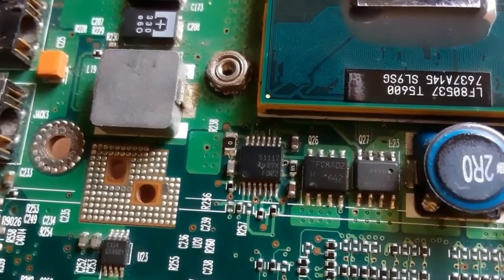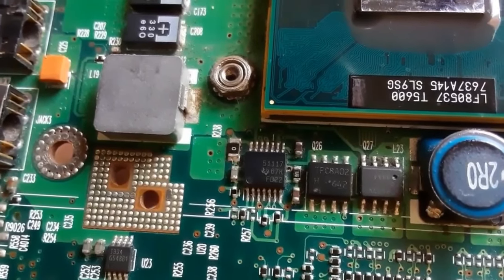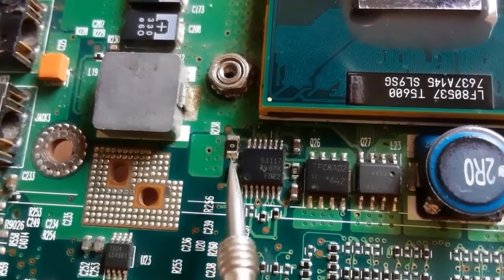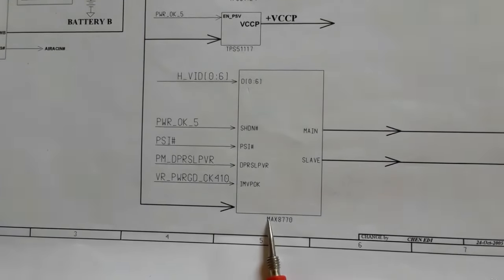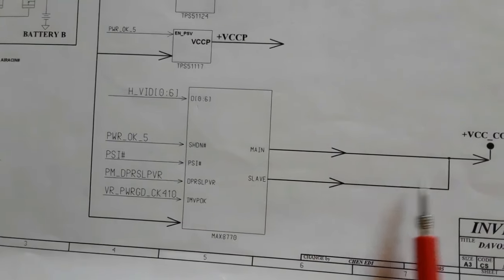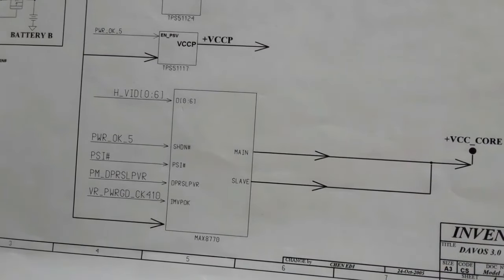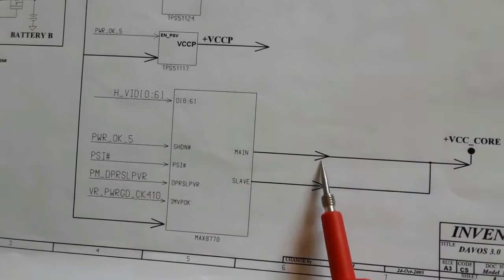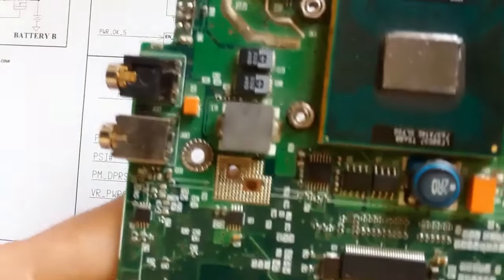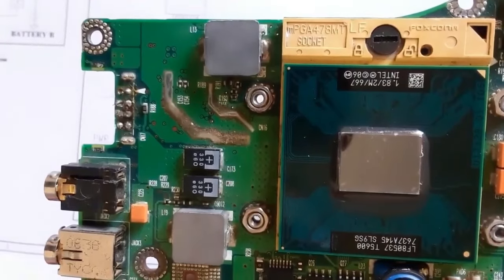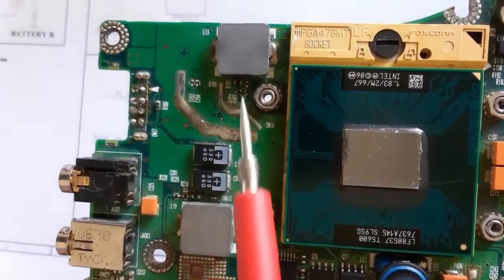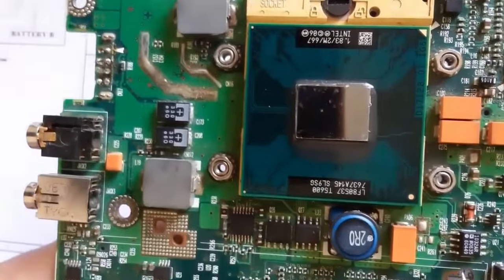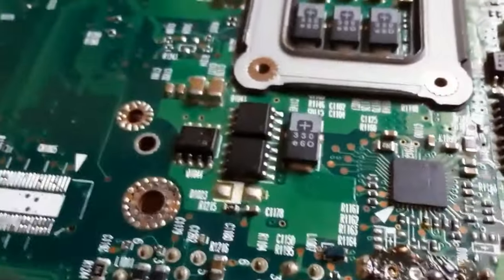This IC also supplies other chips like the PCH or GMCH. Now let's look at the MAX8770 — the CPU power management IC — which generates plus VCC core through two channels. Two inductors are visible, each inductor representing one channel.